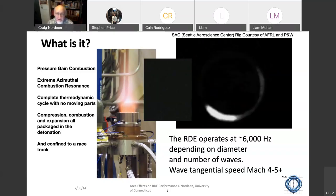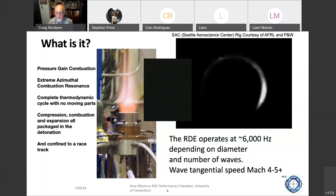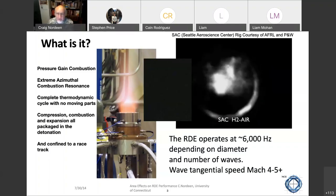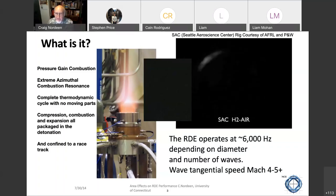So as a cycle, the compression, combustion, expansion is all packed and confined to this gerbil cage that we put it in. This particular device is a three-inch device. It operates at about 6,000 hertz. And the wave tangential speed is the order of Mach 4 or 5.